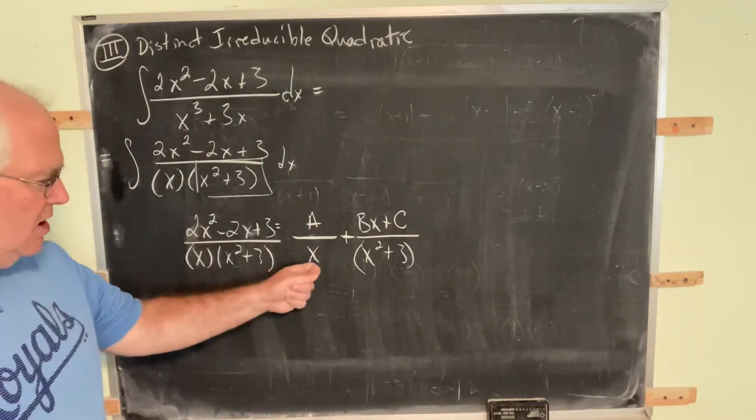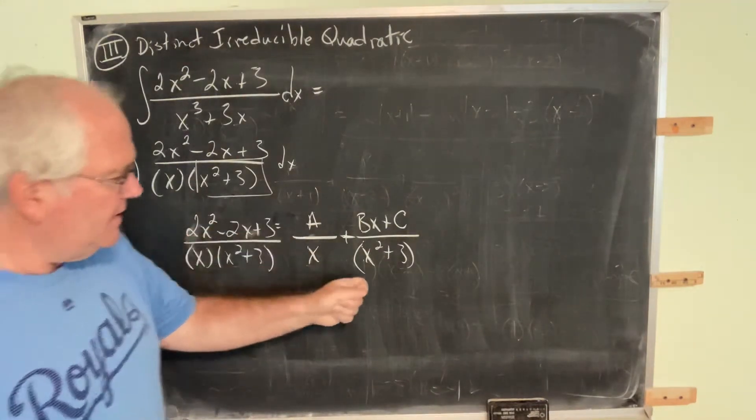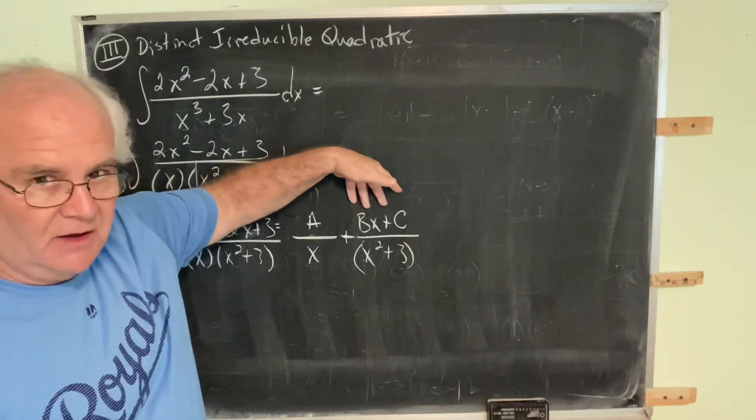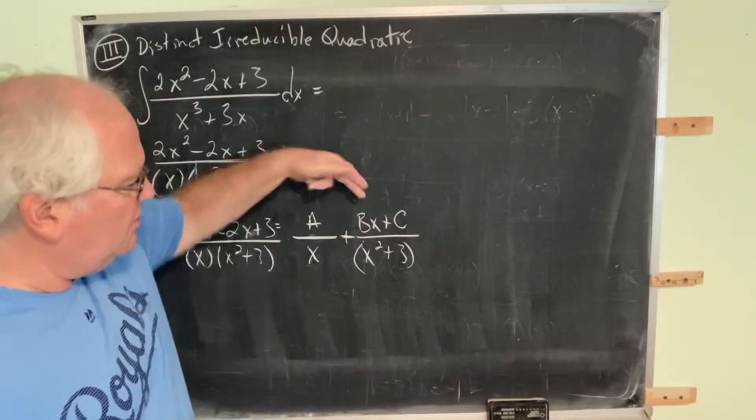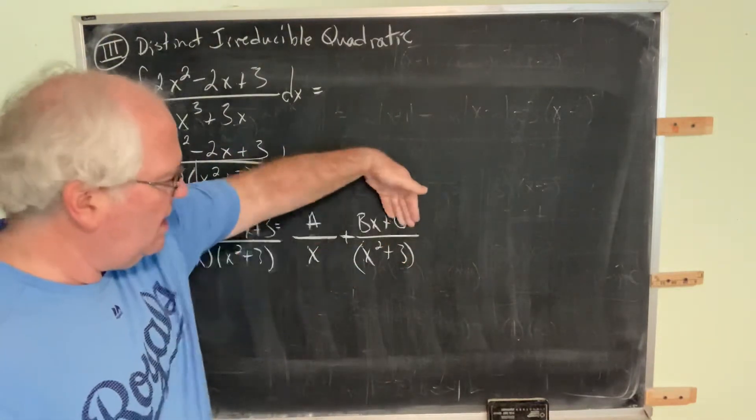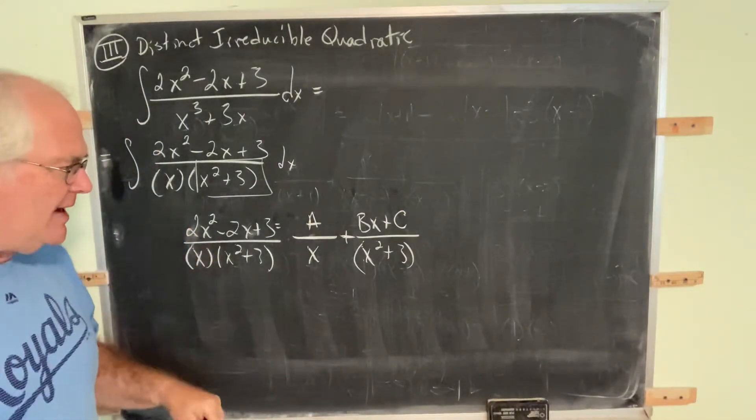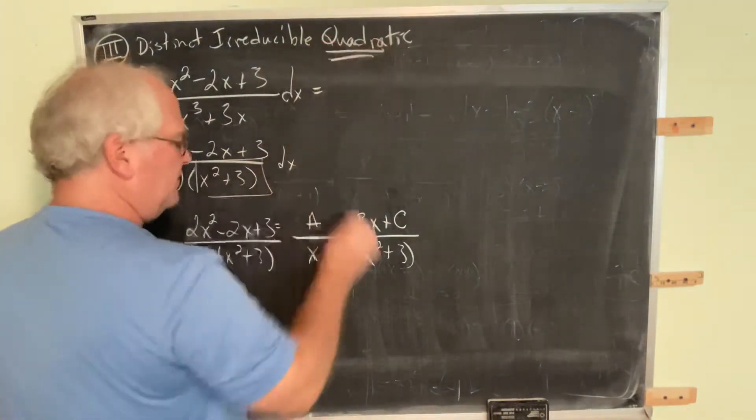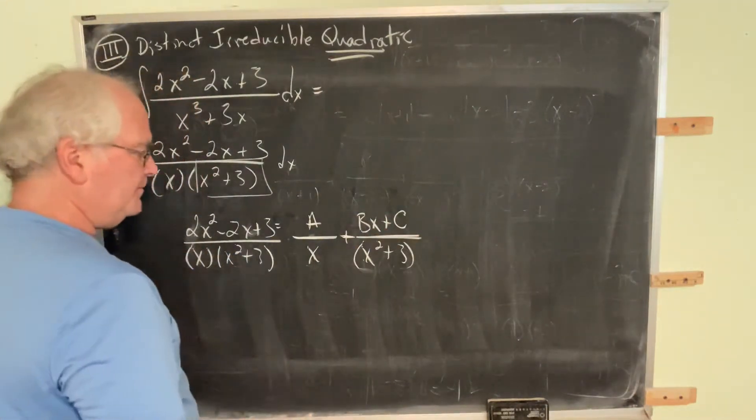If this is linear denominator, this is constant numerator. If this is quadratic denominator, this is potentially linear in the numerator. It could turn out that b might work out to be 0, in which case this falls out, but we need to allow for the possibility. It could turn out that c is equal to 0, but we need to allow for the possibility. You don't know going in what's going to happen coming out, so you allow for both that possibility. If this is quadratic and doesn't factor, this numerator needs to be linear, and it's bx plus c.